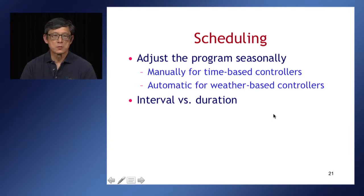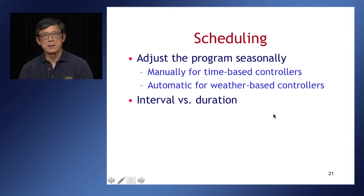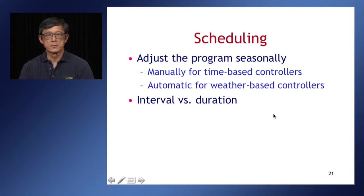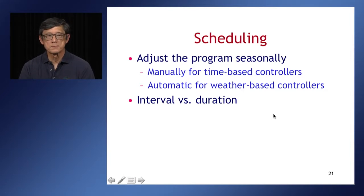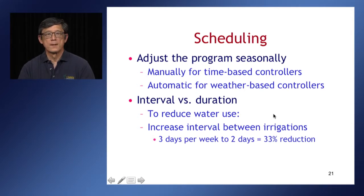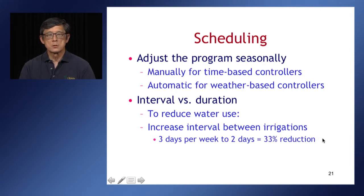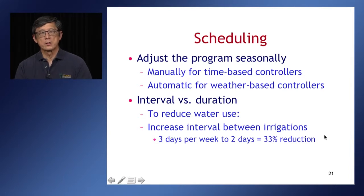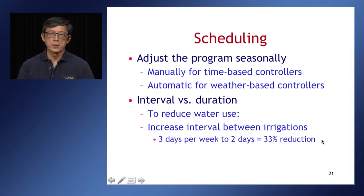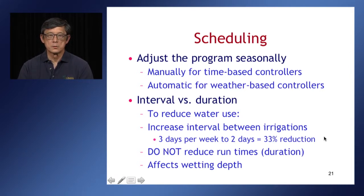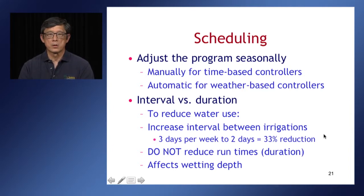I want to talk about irrigation control interval versus duration. Interval is the time between irrigation events, whereas duration is the length of time the valve is left open. The intervals might be days between irrigations, and duration is valve on time in minutes. If we want to reduce water use, the proper way to do this is to increase the interval between irrigations — the number of days between irrigations. For example, if we're currently irrigating three days per week, we can achieve a 33% reduction by irrigating only two days per week. It is not correct to adjust the run times, the durations, because that affects how much water is applied per irrigation and how deep that water gets into the soil.